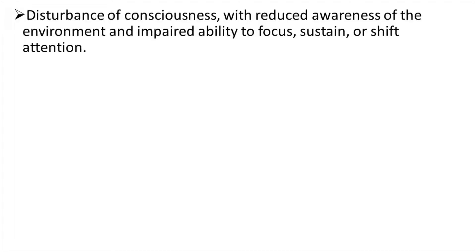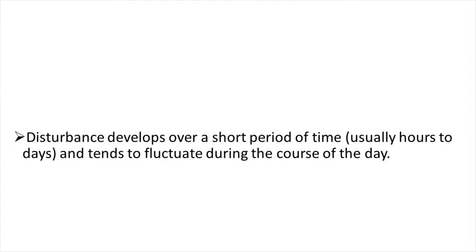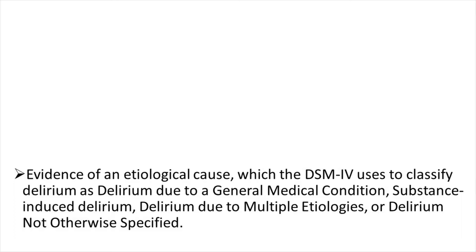The DSM has four criteria that must be met for the diagnosis of delirium: First, disturbance of consciousness with reduced awareness of the environment and impaired ability to focus, sustain, or shift attention. Second, altered cognition — for example memory impairment, disorientation, language disturbance, or perceptual disturbance such as delusion, hallucination, or illusion — not better accounted for by pre-existing or evolving dementia. Third, the disturbance develops over hours to days and tends to fluctuate during the day. Fourth, evidence of an etiologic cause, classified as delirium due to a general medical condition, substance-induced delirium, delirium due to multiple etiologies, or delirium not otherwise specified.